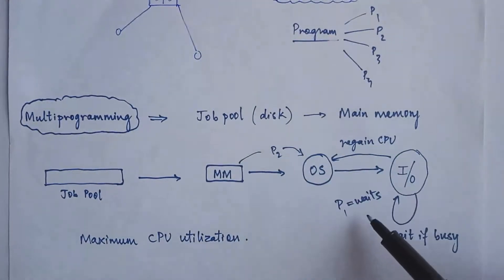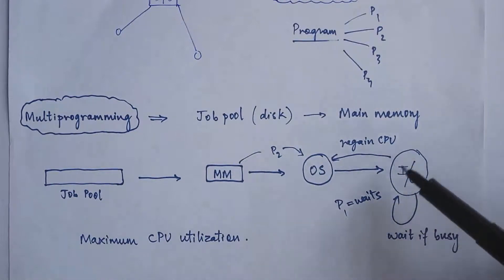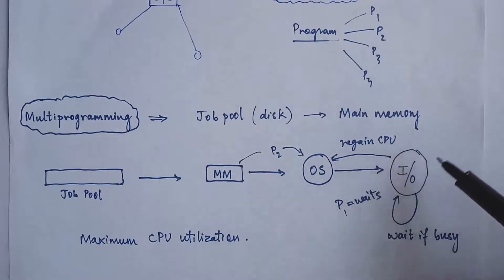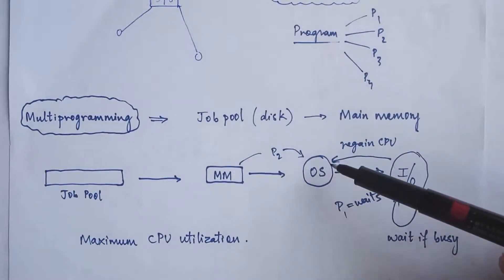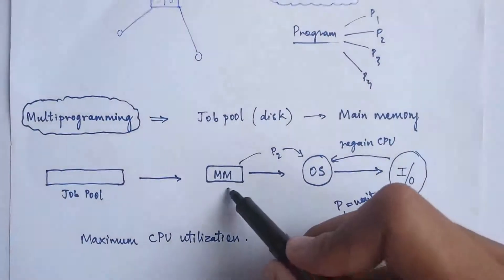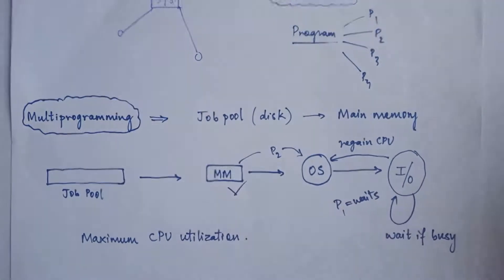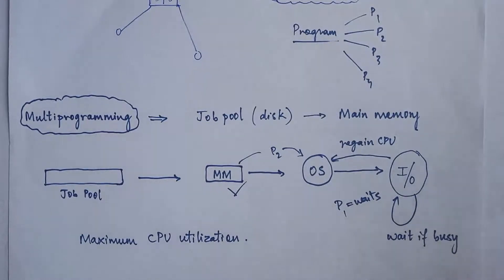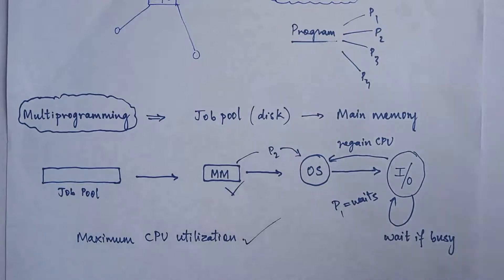Once process P1 gains IO and finishes all IO activities, it regains the CPU and execution of P1 continues. In this way, unless there are no processes in main memory, the CPU never sits idle. That is the main concept of multiprogramming. The main advantage of multiprogramming is that it helps in maximizing CPU utilization.